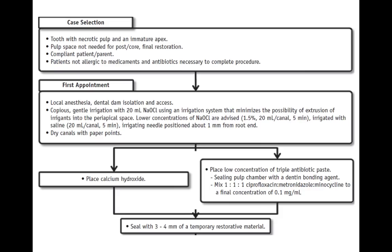The second important criterion is a pulp space that does not need any post and core; grossly decayed teeth are contraindicated for the regeneration procedure. Third is the cooperation of the patient and the parent, as they need to come for follow-ups and a second visit. The fourth criterion is that the patient should not be allergic to the medications and antibiotics necessary to complete the procedure.